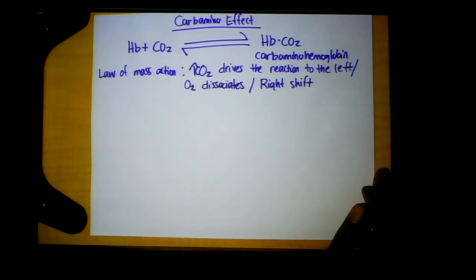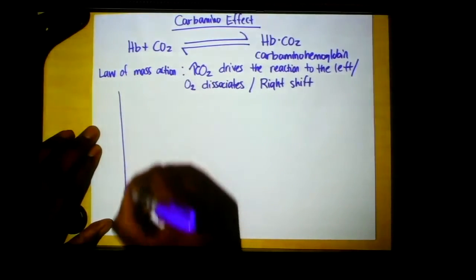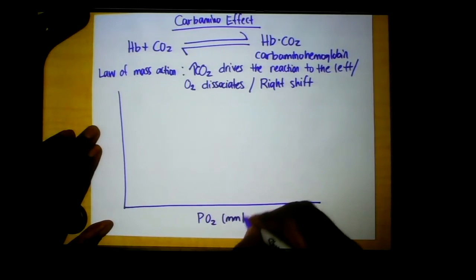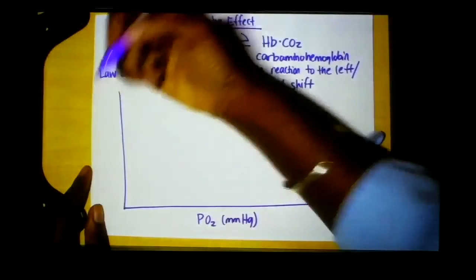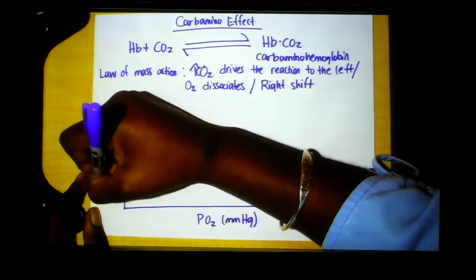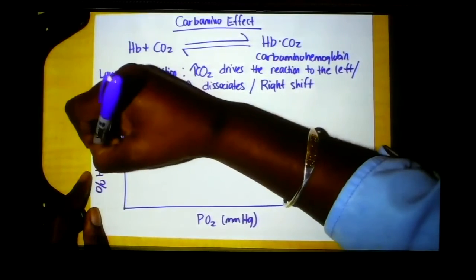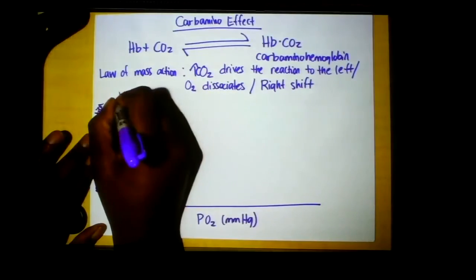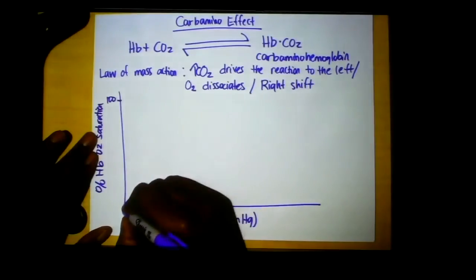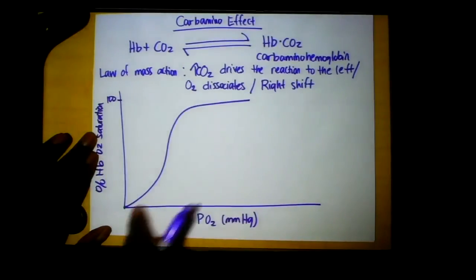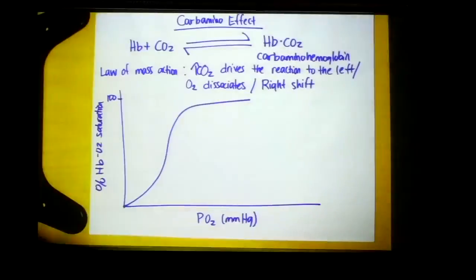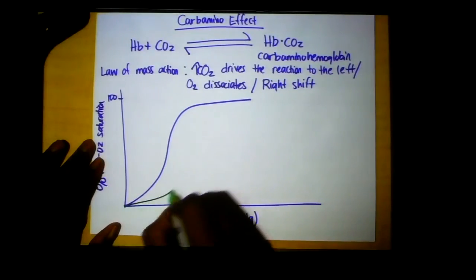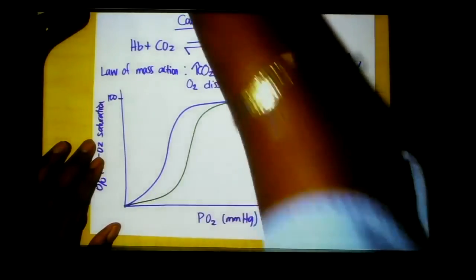So this is also aligning with that increase in metabolic activity, and we'll just illustrate that here. This should be very familiar at this point. This should make sense, right? So we've got our normal curve, we've got our right shift, and we've got our left shift.